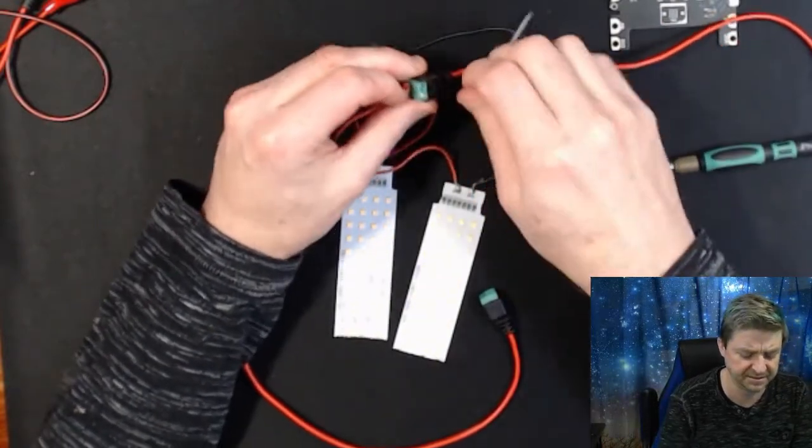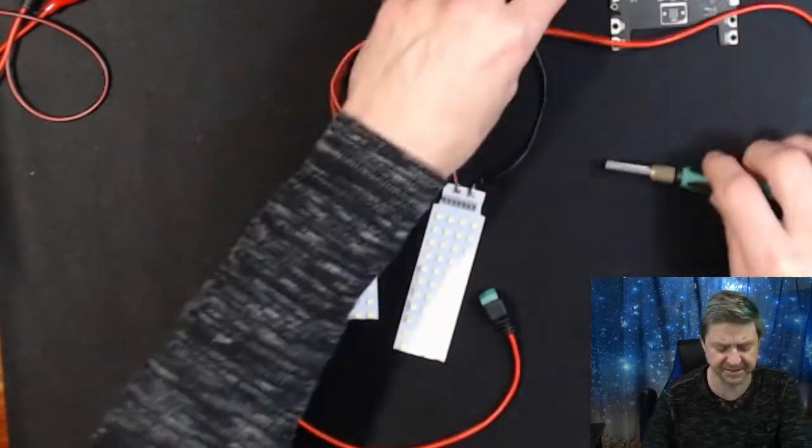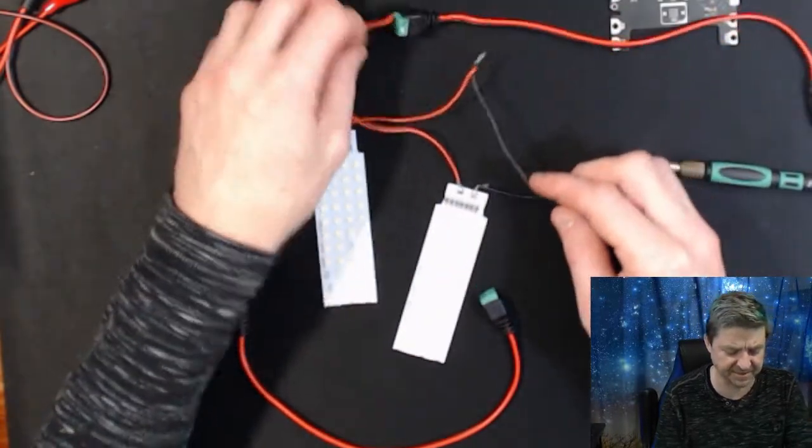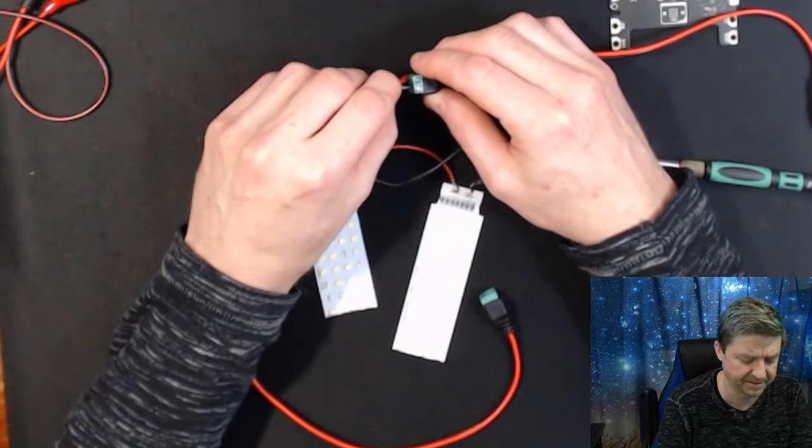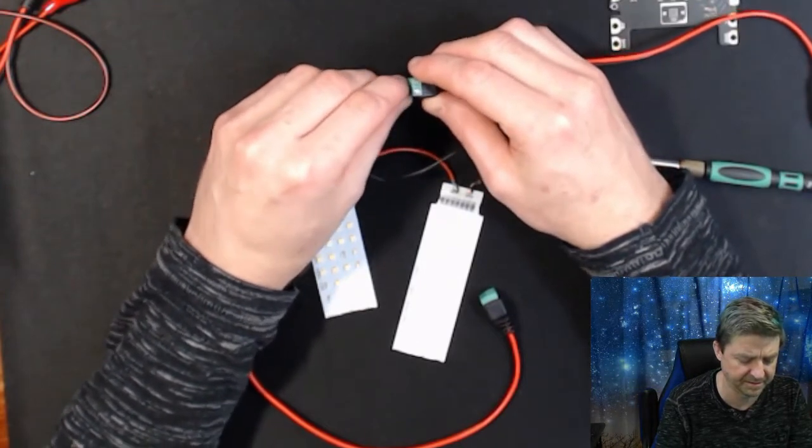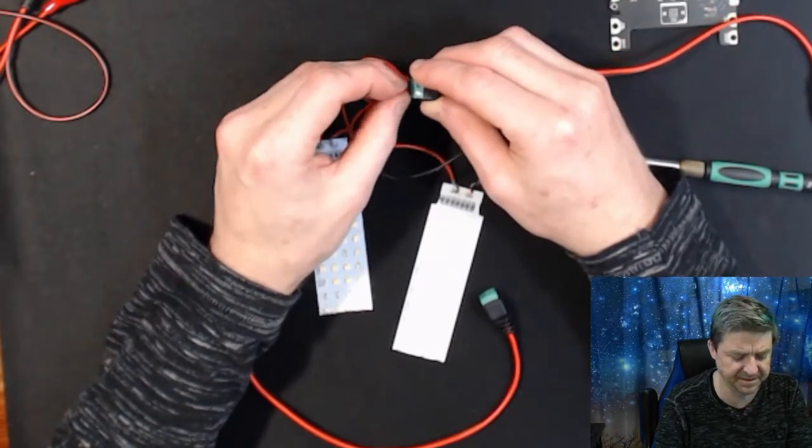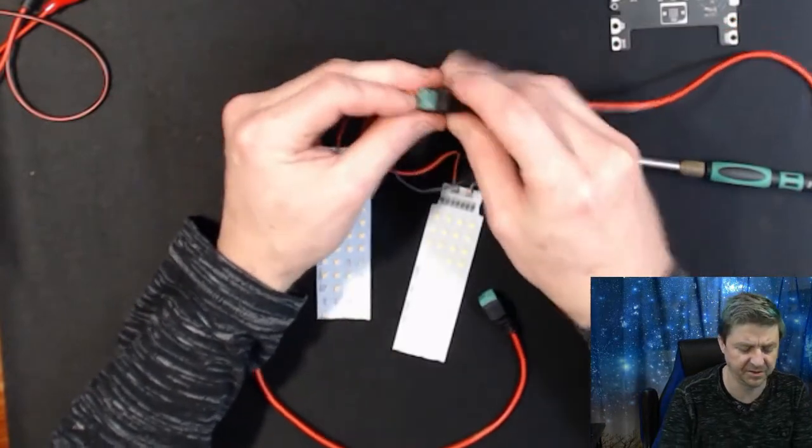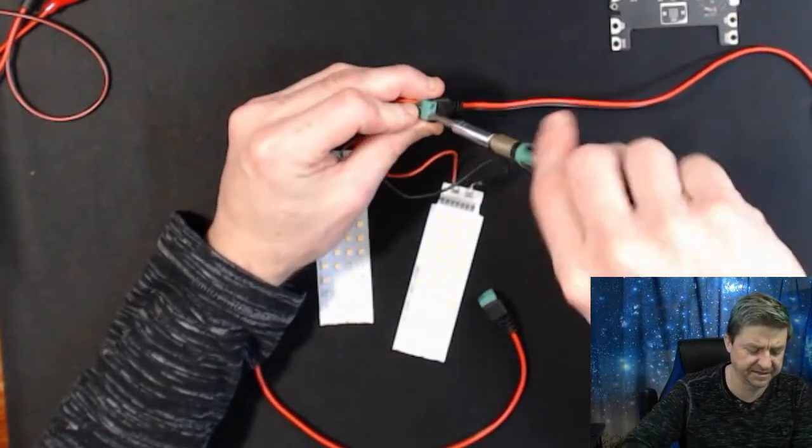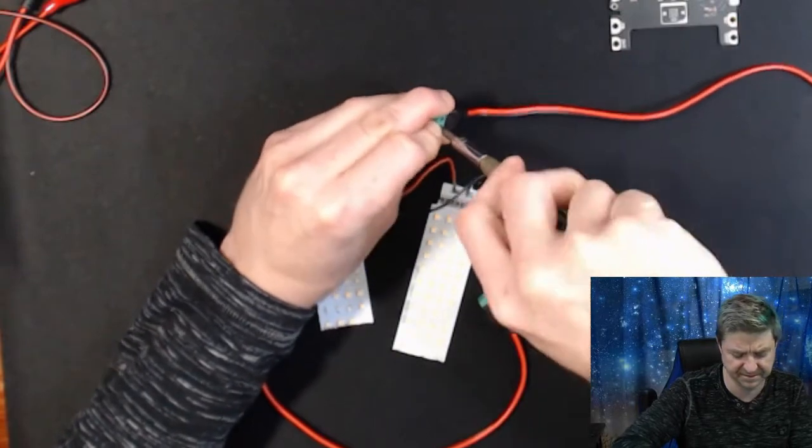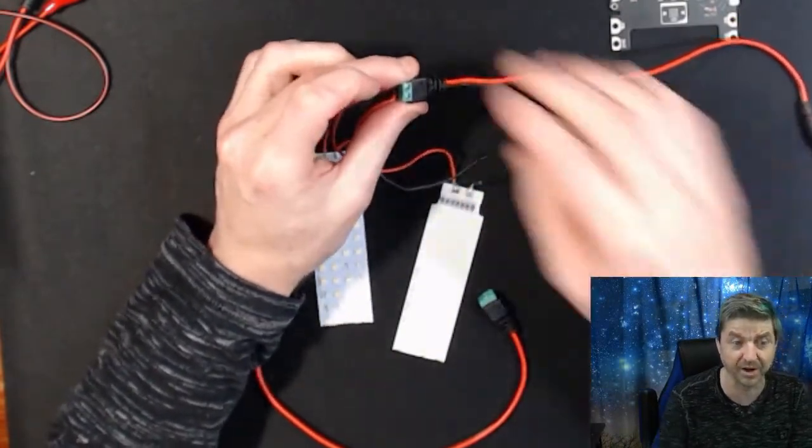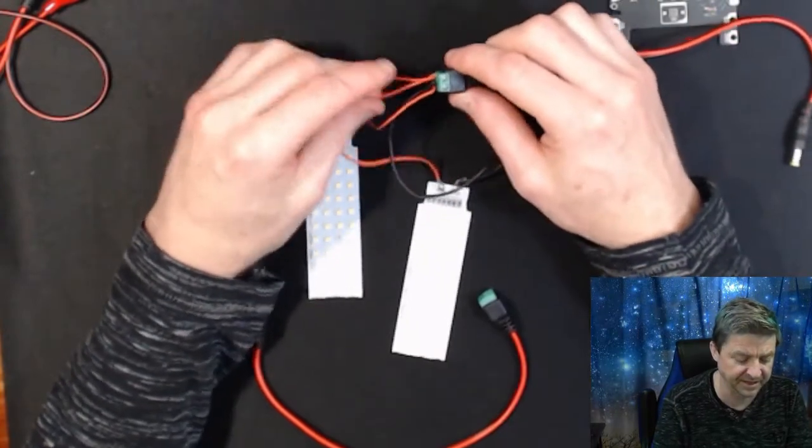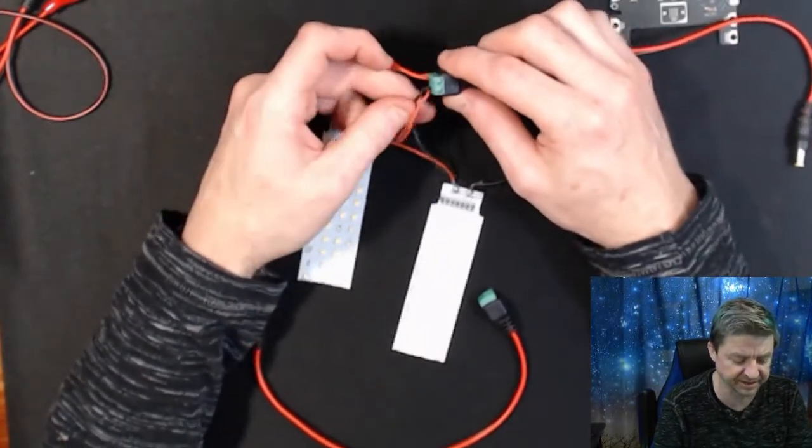That one's nice and tight. We're going to do exactly the same thing with the negative side. Hold it again nice and tight. You want to tighten the screw up as tight as you can get it because you don't want your wires to come out. Give each wire a tug.